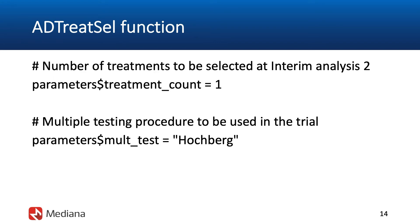For the treatment selection rule, the software tool is flexible, enabling the sponsor to predefine any number of best doses or regimens to be selected at the second interim analysis. In this case, the sponsor wants to identify the single best dosing regimen for comparison against placebo at the final analysis, so the treatment count parameter is set to 1. Multiplicity adjustment will be performed using the Hochberg test.